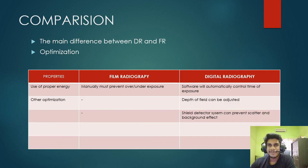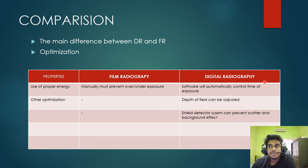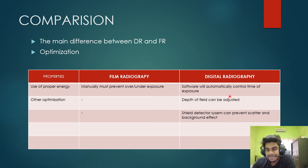For optimization comparison: in film radiography, experts must manually prevent under- and over-exposure, while in digital radiography the software automatically controls exposure time, making setup much more efficient. Additional optimization options in digital radiography include depth of field adjustment, which produces 3D imaging, and a shielded detector system that prevents scatter and background effects — options that are very minimal or unavailable in film radiography.